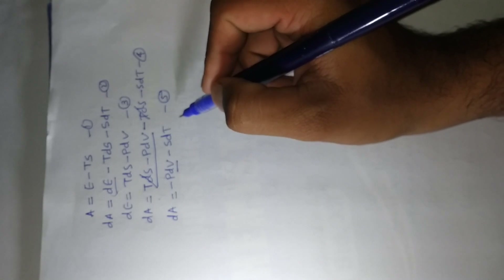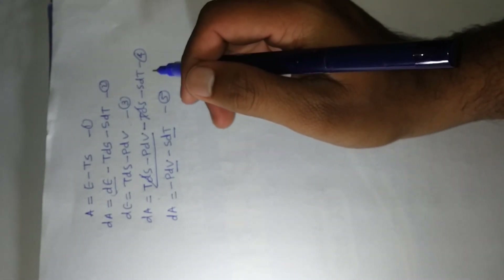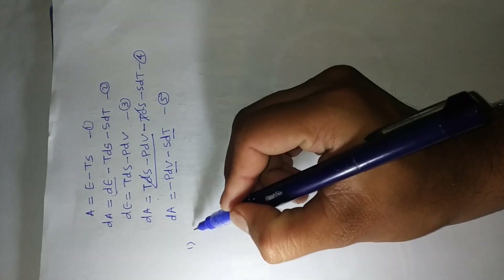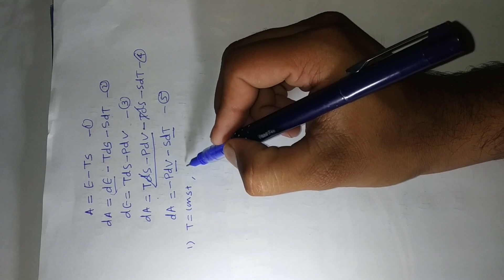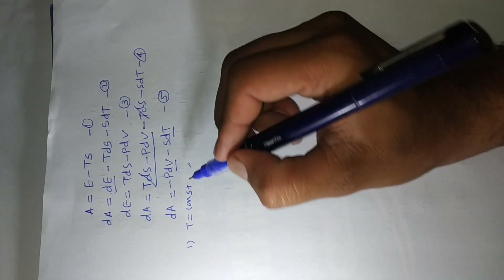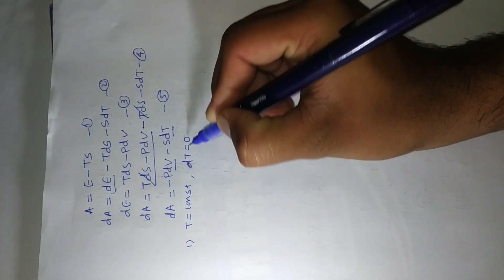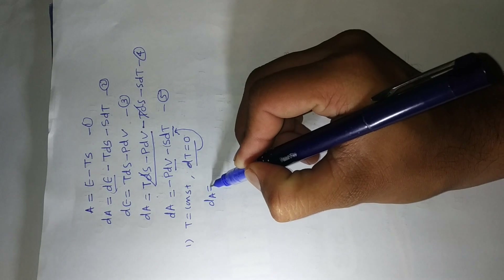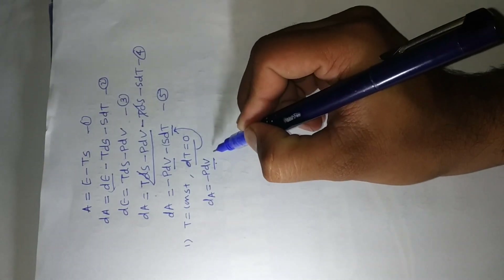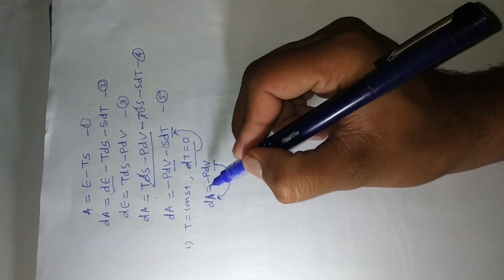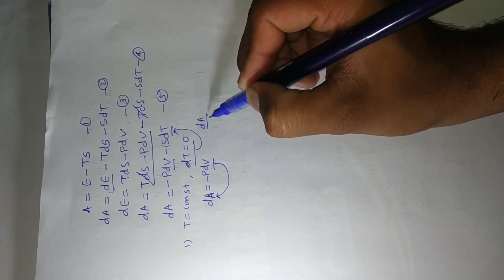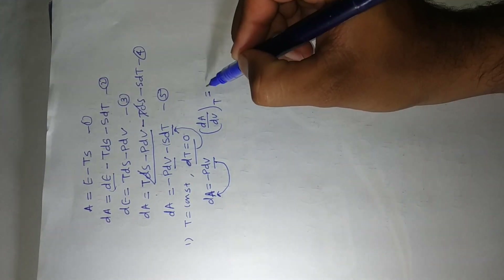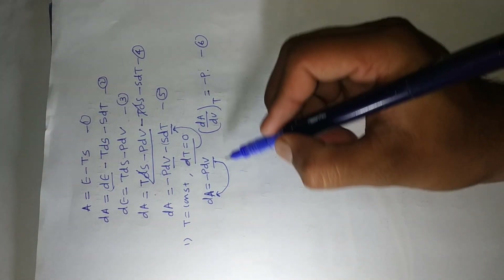We are making temperature constant. If temperature is constant, then the change in temperature is zero. If we put the value dT = 0 here, then that term vanishes, and equation 5 becomes: dA = minus PdV. In the next step, we transfer dV to the other side, then we get that the variation of A with volume at constant temperature is equal to minus P. This is equation number 6.